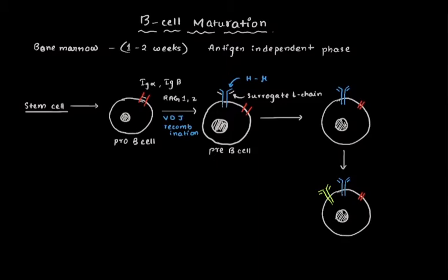The surrogate light chain which I talked about is lambda-5 and V-pre-B proteins. These two make up the surrogate light chain.